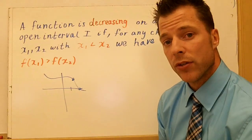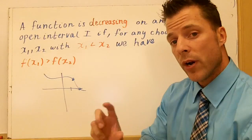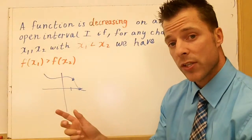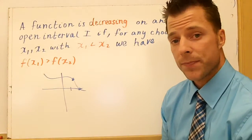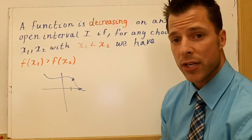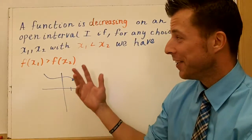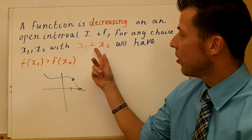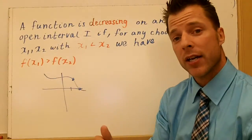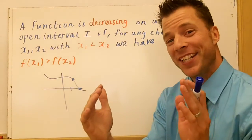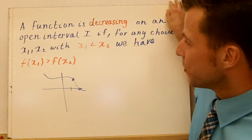So what we're going to look at here is several examples, and we're going to try to identify where the function is increasing and decreasing, and then state those intervals using interval notation. It's important to remember that it's an open interval — so we're not closed. When we look at our interval, it's going to be open circles or parentheses when we talk about interval notation.